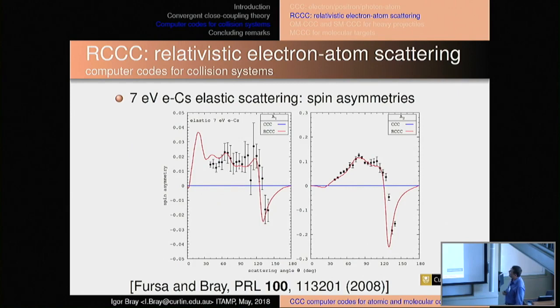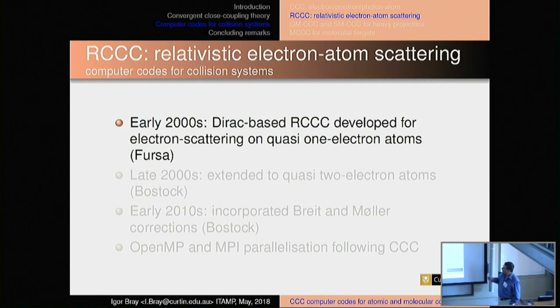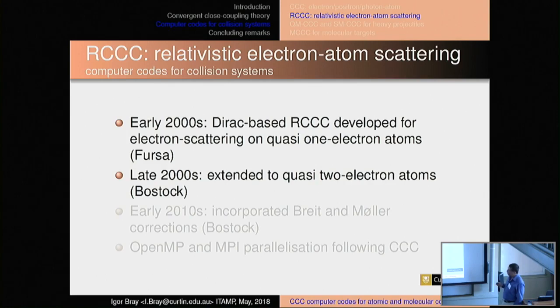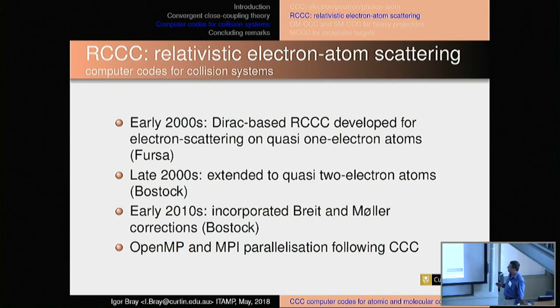Next code: Relativistic CCC, Dirac-based entirely. This is the case for electron-cesium scattering. Non-relativistic CCC gives you exactly zero for these spin asymmetries, and you need a Dirac-based code to get these right. Dimitri Fursa started developing this at Flinders University on his way to joining us in Western Australia. Then a wonderful PhD student, Chris Bostock — who spent some time here and is now interested in quantum field theory — incorporated Breit-Marler corrections during his PhD. The parallelization used is the same as CCC.